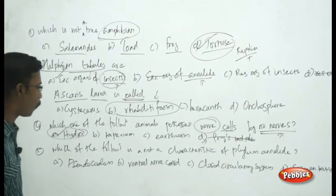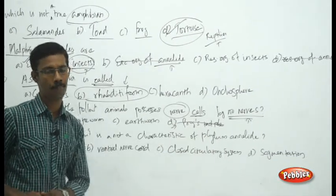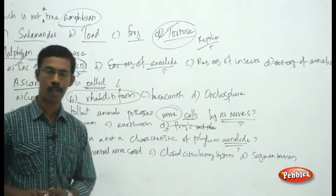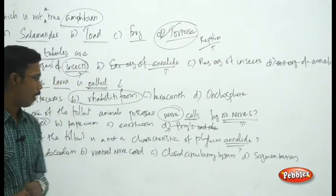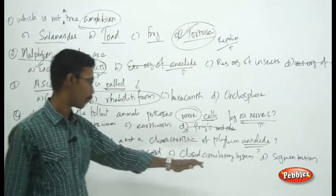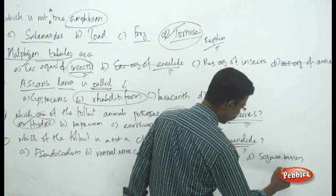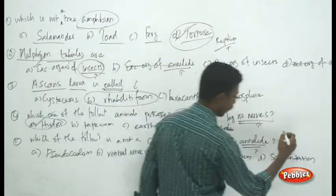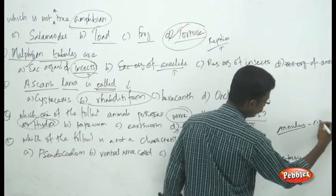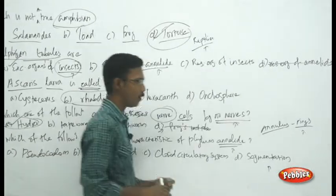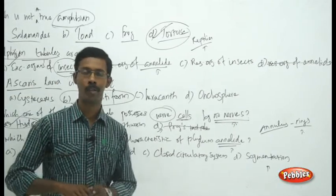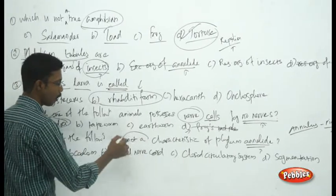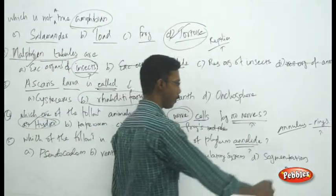See the next question: which one of the following is not a characteristic of phylum Annelida? The choices are pseudocoelom, ventral nerve cord, closed circulatory system, and segmentation. Annelida refers to 'annulus,' meaning ring — their body is made up of ring-like or segmented structures. So segmentation is present, and since the question uses negative connotation, you can easily eliminate segmentation.